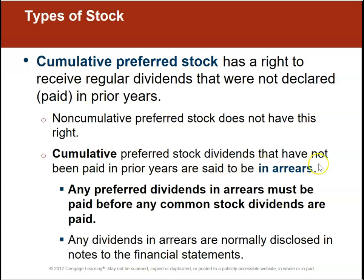Cumulative preferred stock dividends that have not been paid in prior years are said to be in arrears, meaning we're behind on paying. Any preferred dividends in arrears held by cumulative preferred stockholders must be paid before any common stock dividends are paid. Any dividends in arrears are normally disclosed in the notes to the financial statements — by doing this, we let potential investors in common stock know that they may not get any dividends right away because we have these dividends that are in arrears.